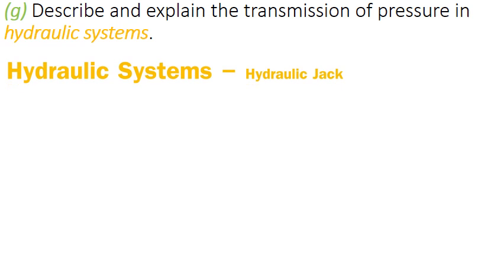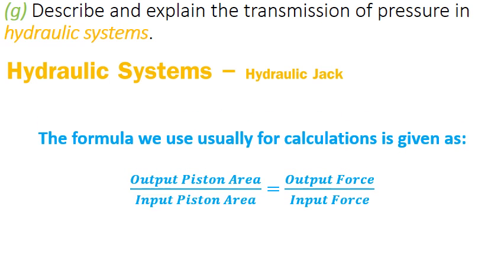Now let's look at the formula we use in hydraulic jacks. This formula helps us find one value if three other values are given. It is: output piston area divided by input piston area equals output force divided by input force. In other words, the ratio between areas should be the same as the ratio between forces.